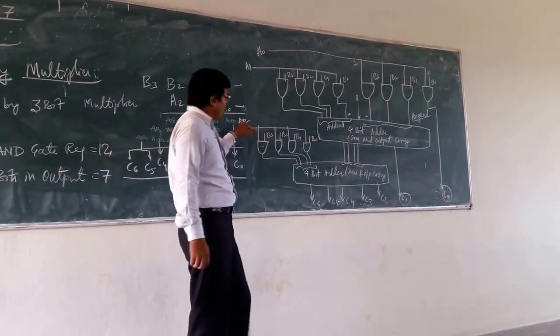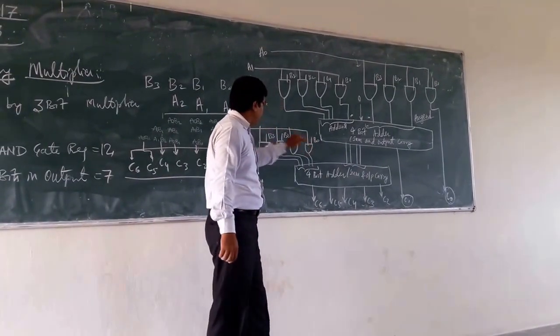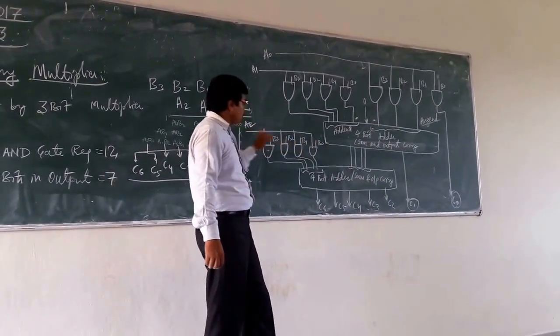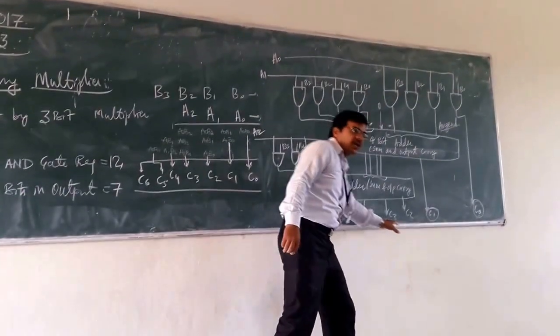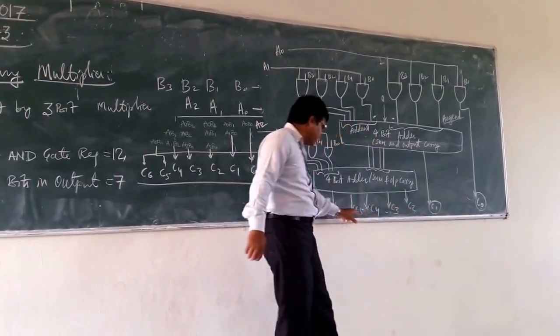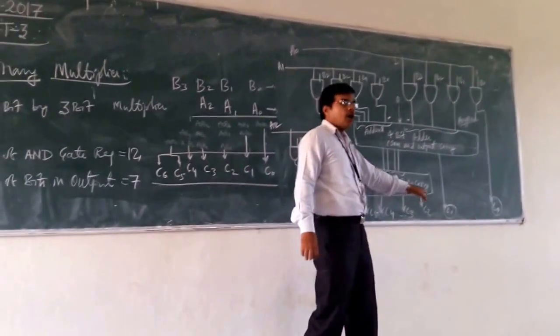And from here we are using these, these are your A2 B0, A2 B1, A2 B2, A2 B3. From there we are getting it. And one of the output that we are having, that is your C2, C3, C4, C5, C6, this is the output.